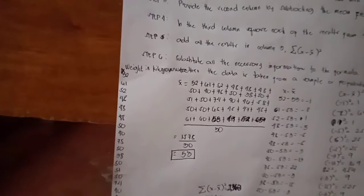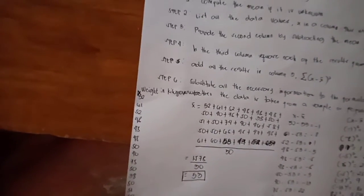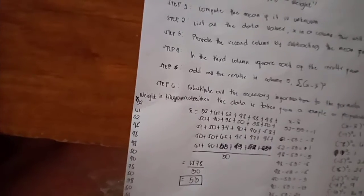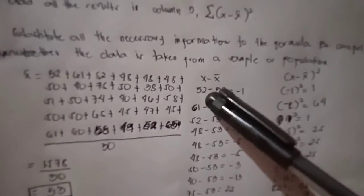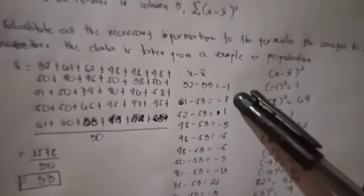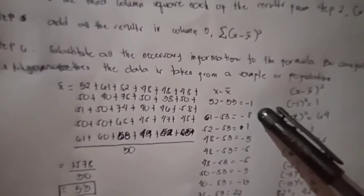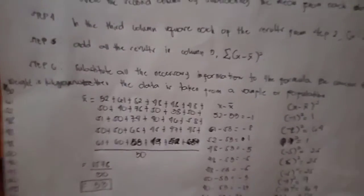For the third step, we need to provide another column. This will be x minus mean, so our mean is 53. By doing that, we have 52 minus 53 is equal to negative 1. The same procedure will be done for the data values here. We get the following values for step 3.